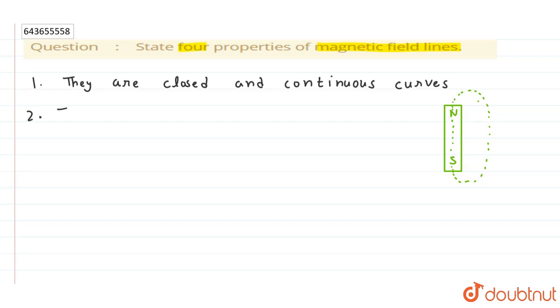property is they are directed from north pole to south pole. Now this statement means that the magnetic field lines